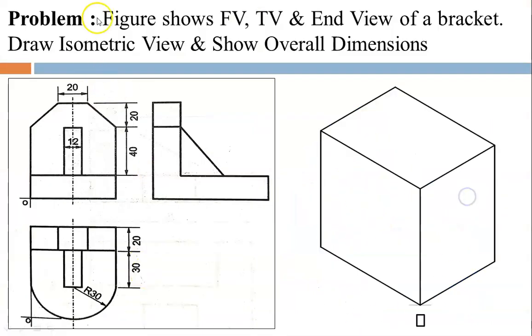The problem states: the figure shows front view, top view, and end view of a bracket. Draw the isometric view and show overall dimensions. This is the question given to you.